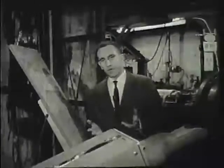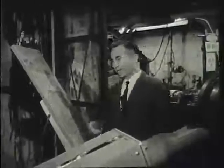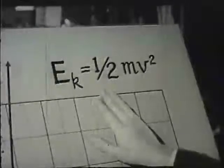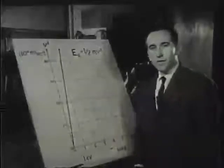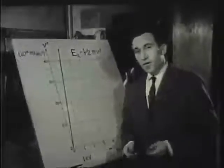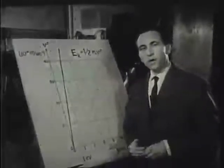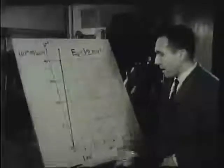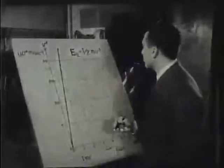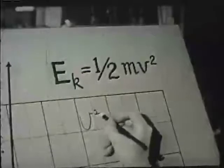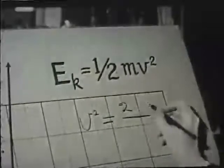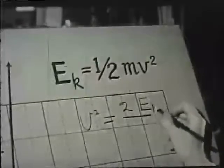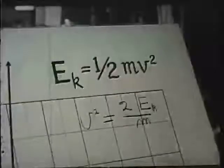In the range of our normal experience, the speed of a body is related to its kinetic energy in a well-known way. This Newtonian relationship applies even when we use speeds such as those of rocket travel or the speed of our Earth in its orbit about the sun. We are going to use speeds that are very much higher than these and see if this relationship is still valid. For the speeds we are accustomed to, the velocity squared is proportional to the ratio of the kinetic energy to mass.